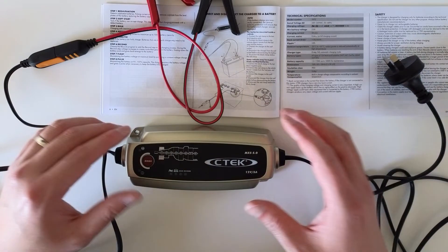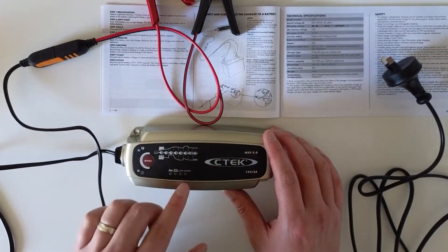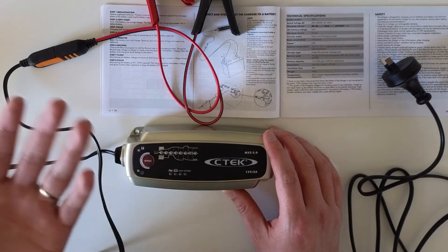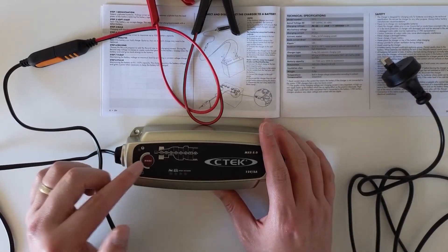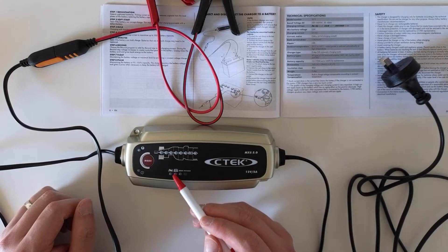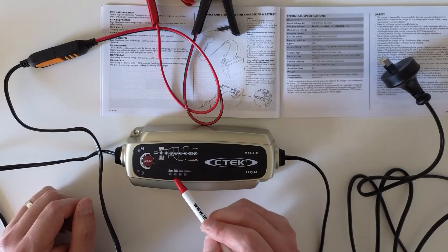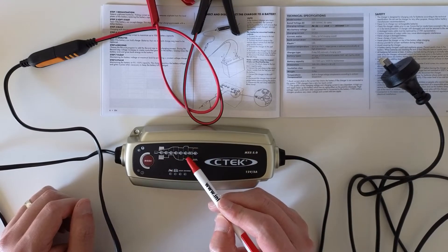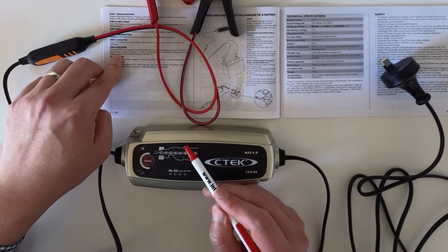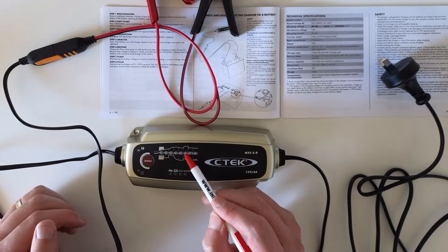Once you connect everything, you can select different mode. Initially what I did, I just started everything and it automatically starts at this mode which is for car. And what it does is that it will skip step number six. Number six is a recondition step, so you assume the battery is okay and you will skip step six.